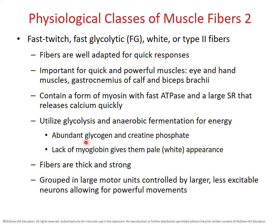Fast glycolytic fibers have fewer mitochondria than slow oxidative fibers. Their myosins have faster enzymes for faster twitches and release calcium from the sarcoplasmic reticulum more quickly. The fibers tend to be thicker in diameter, making them stronger. They're grouped into larger motor units because we're interested in fast bursts of power rather than precise contractions. All features correlate well with their function of quick and powerful contractions.